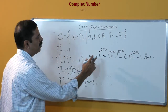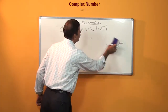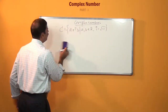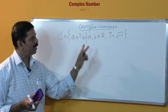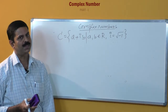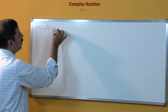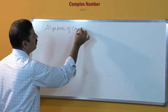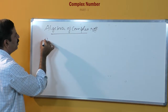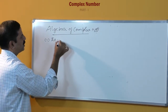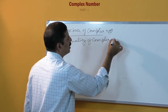In this manner, any higher power of i can be simplified. After knowing this, we will try to know how to add, subtract, multiply, and divide two complex numbers. We will call this the algebra of complex numbers. Before that, we will try to know about equality of complex numbers.